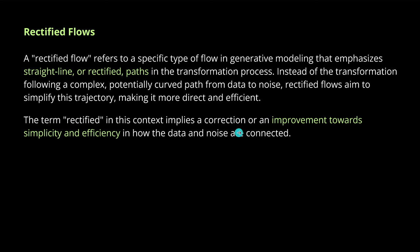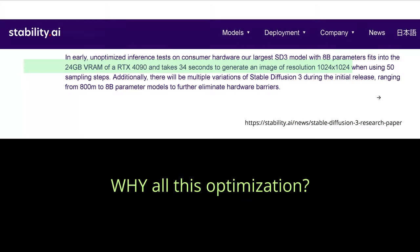We go one step further with rectified flow. The rectified flow is a specific type of flow in a generative model that emphasizes a straight-line path structure in the transformation process. Instead of having a complex, potentially curved path from data to noise distribution, which can be computationally more complicated and time-intensive, we just go with a straight line — the mathematical simplification calculated immediately. Rectified here implies a correction or improvement towards simplicity and efficiency in how the data distribution and the noise distribution in our high-dimensional mathematical space are connected.